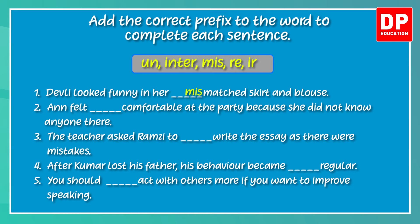For the second sentence, the word is 'comfortable' and the prefix needed is 'un' — uncomfortable. 'Ann felt uncomfortable at the party because she did not know anyone there.' For the third one, the teacher asked Ramzi to rewrite the essay as there were mistakes — meaning he had to write it again. The fourth: 'After Kumar lost his father, his behaviour became irregular' — opposite of regular, meaning not usual. The last one: 'You should interact with others more if you want to improve speaking.' The prefix 'inter' means between, among, or together. Hope you could get all these correct.